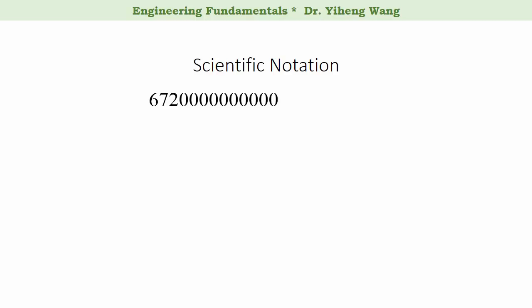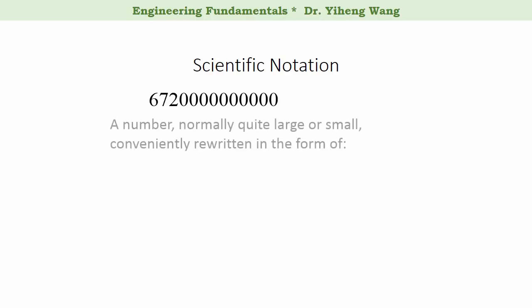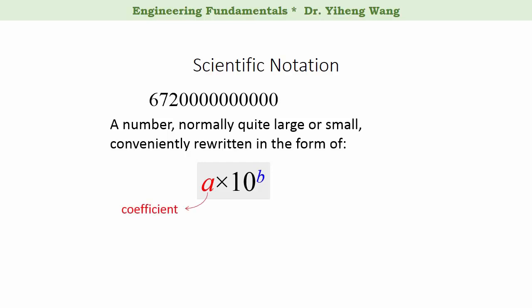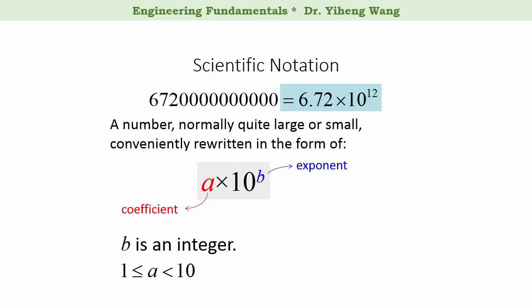For example, when we see a large number, it is difficult to perceive right away just how large it is without spending time counting all the zeros. Therefore, for convenience, we want to rewrite very large or very small numbers in the form a times ten raised to the power of b. A is known as the coefficient, and b is the exponent. This is known as scientific notation if b must be an integer — positive, negative, or even zero — and a must be greater than or equal to one and less than ten. Our original number is expressed in scientific notation as 6.72 times ten to the twelfth power, which is 6.72 trillion.